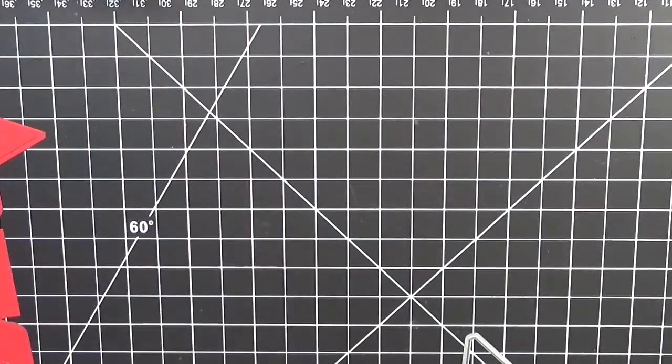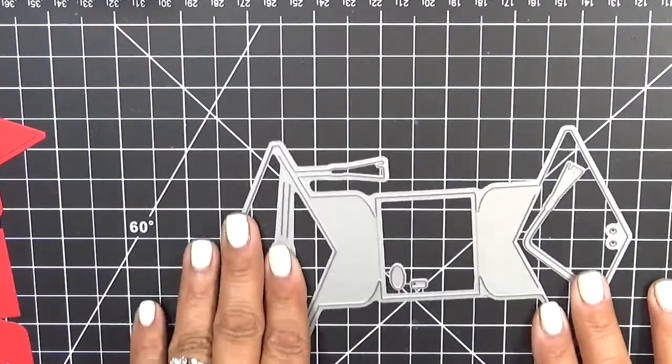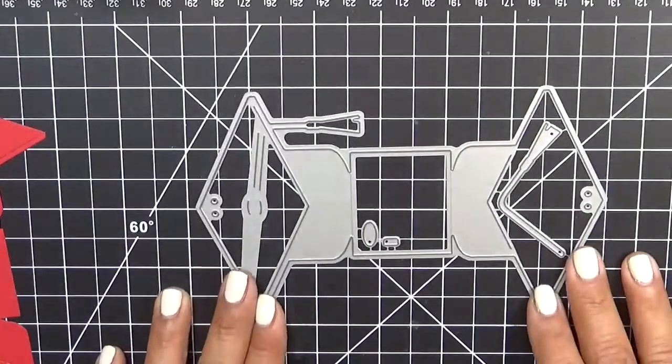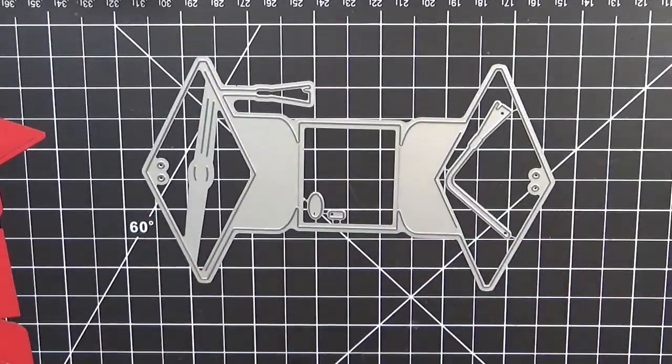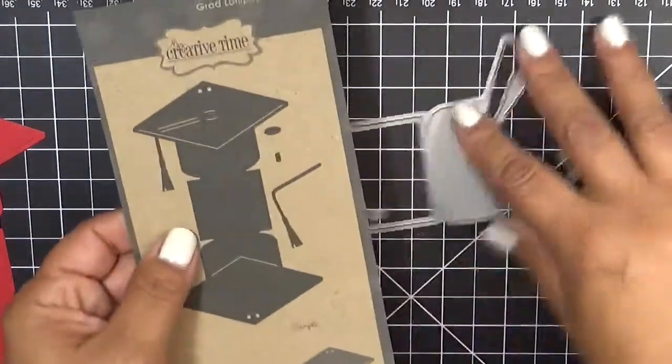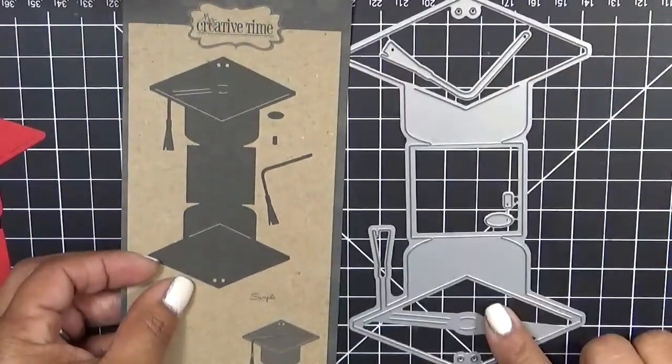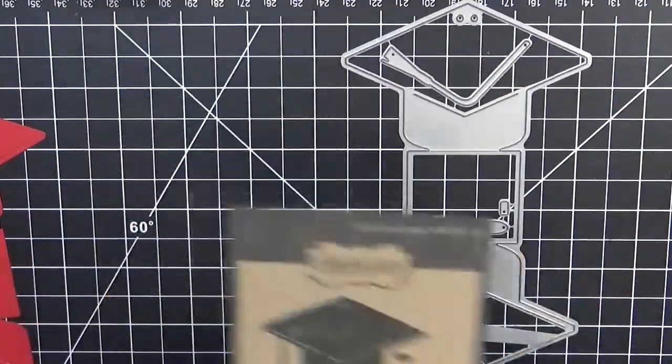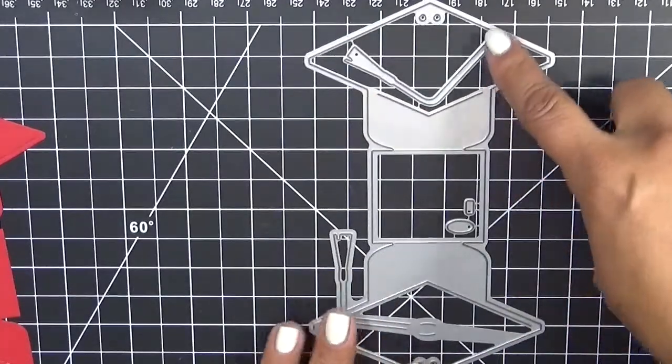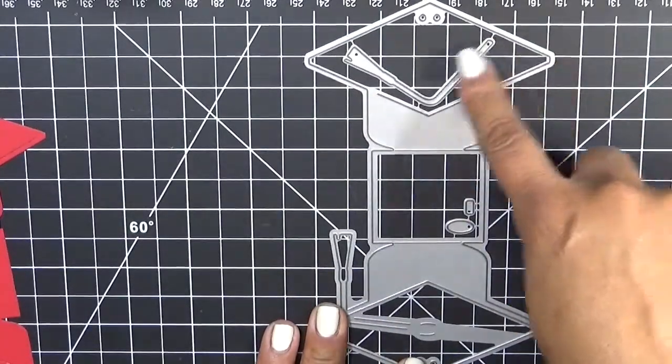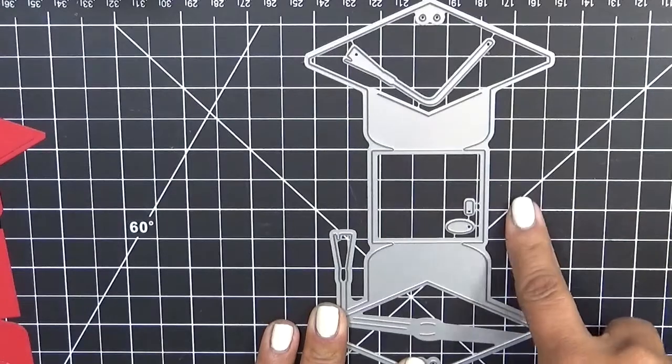Okay that's the first one and the second one is our grad lollipop holder die. The reason why I didn't want to show it to you in the packaging is because it looks super small in the packaging compared to the actual physical die.